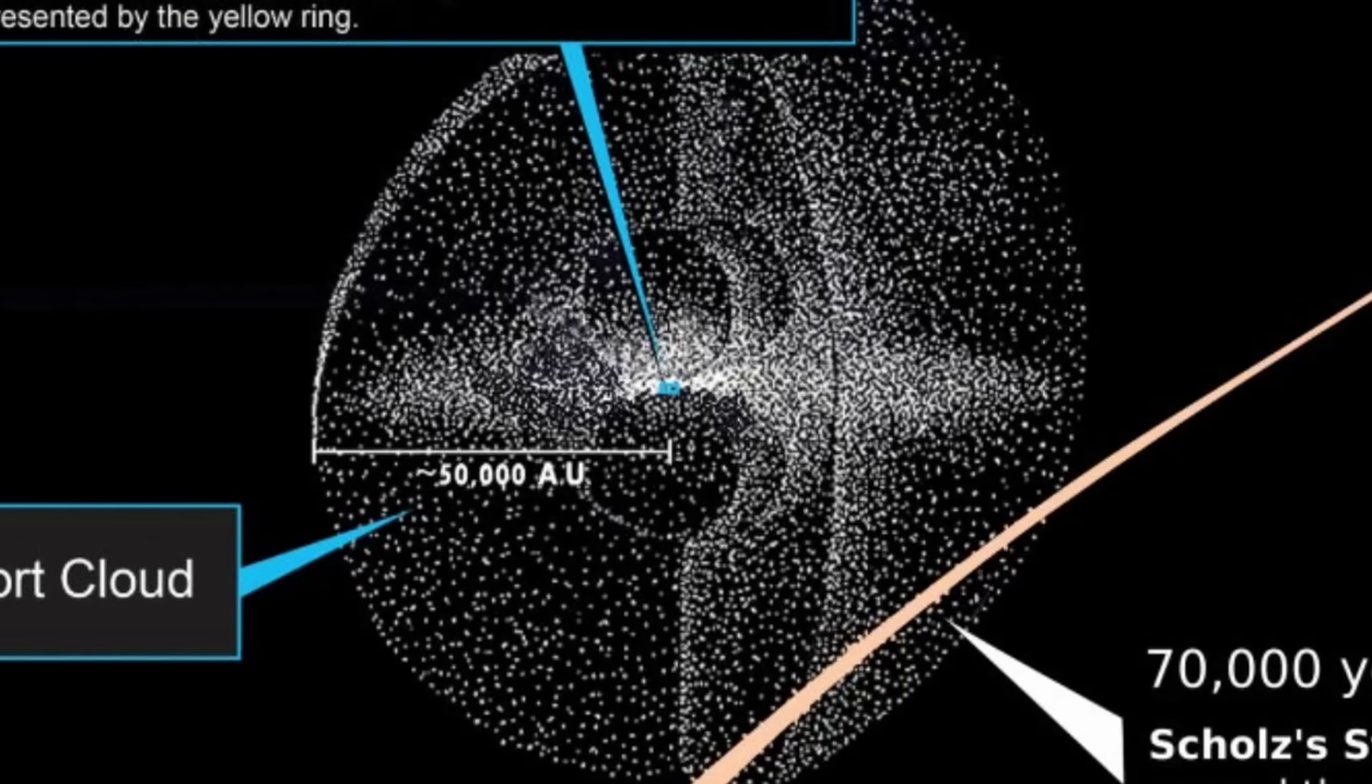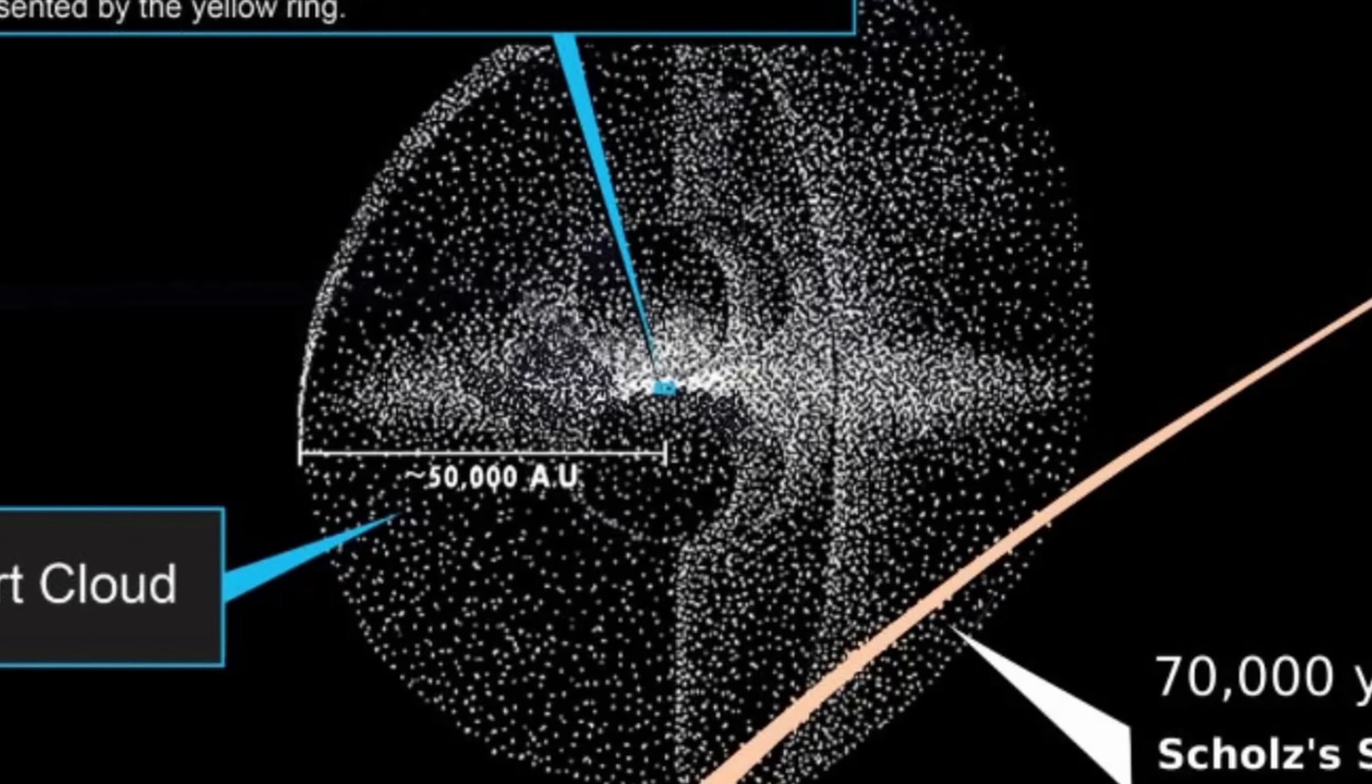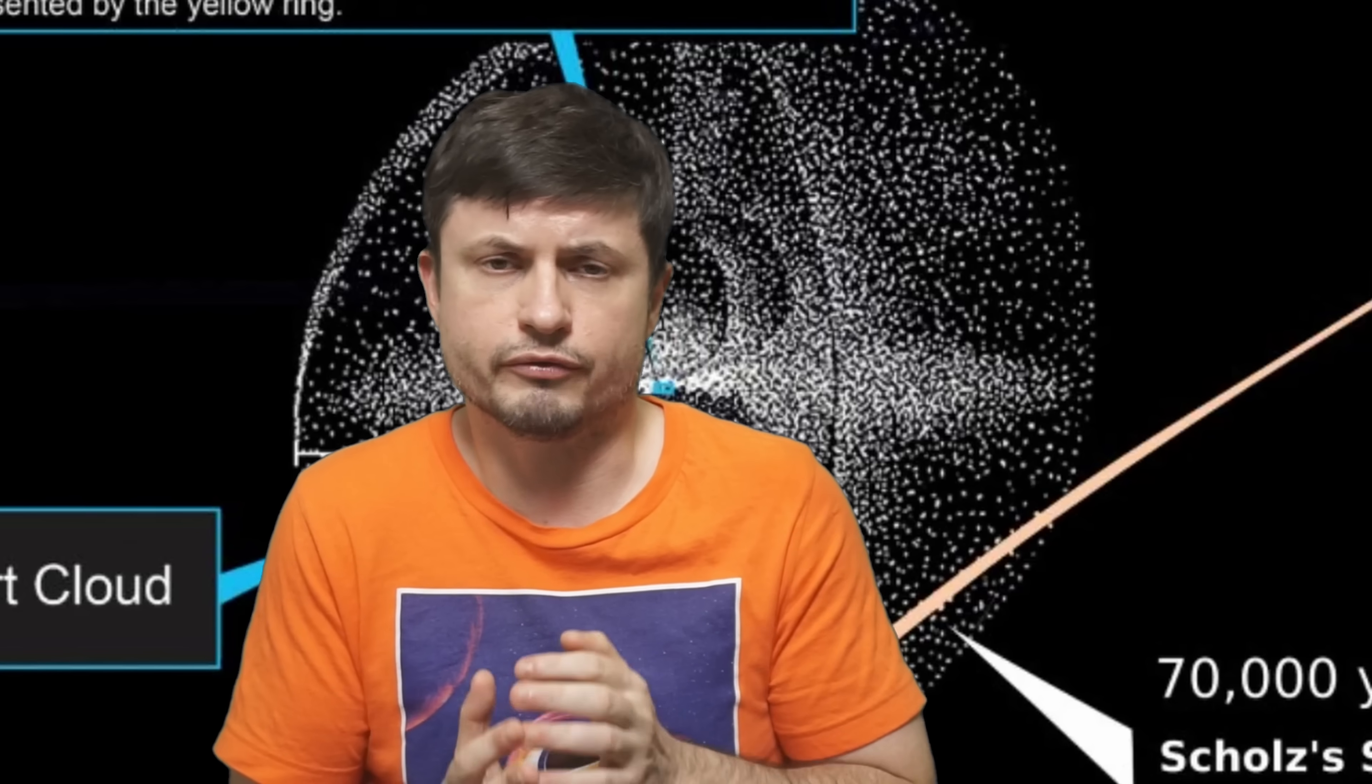So a lot of cometary objects that were disturbed by the Scholz's star are still going to take thousands and thousands of years before they enter the inner solar system.